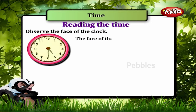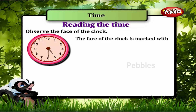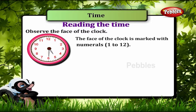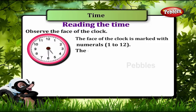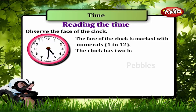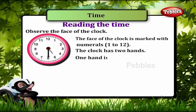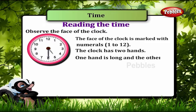The face of the clock is marked with numerals 1 to 12. The clock has two hands. One hand is long and the other is short.